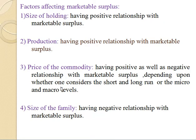Now the factors affecting marketable surplus. First is the size of holding, which has a positive relationship with marketable surplus — if the size of holding is more, then marketable surplus is also more. Second, production has a positive relationship with marketable surplus. Third, the price of the commodity has both a positive and negative relationship with marketable surplus, depending on whether one considers the short run or long run, or micro and macro levels. Fourth, the size of the family has a negative relationship with marketable surplus.